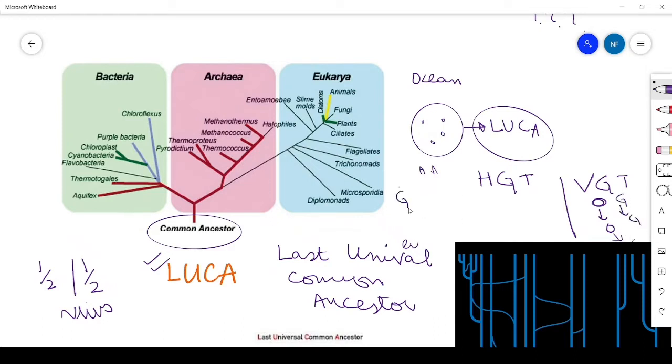And in horizontal gene transfer, it means that the organism can transfer the gene. Horizontal gene transfers, the kinds of conjugation, transformation, and transduction.